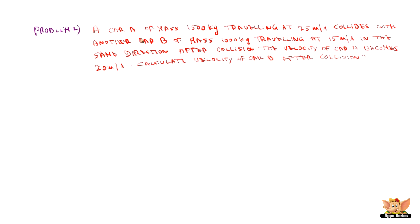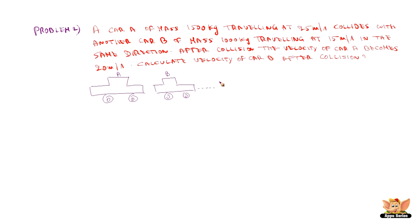Problem 2: Car A of mass 1500 kg travelling at 25 meters per second collides with another car B of mass 1000 kg travelling at 15 meters per second in the same direction. After collision, the velocity of car A becomes 20 meters per second. Calculate the velocity of car B after collision. Vectorially represent A and B colliding.